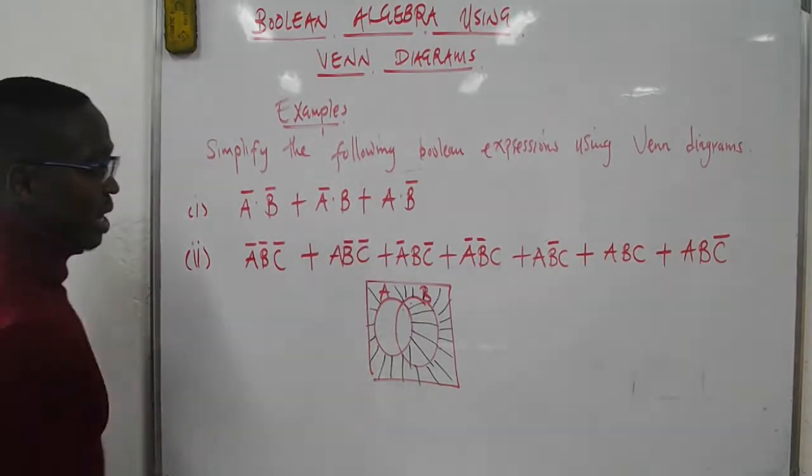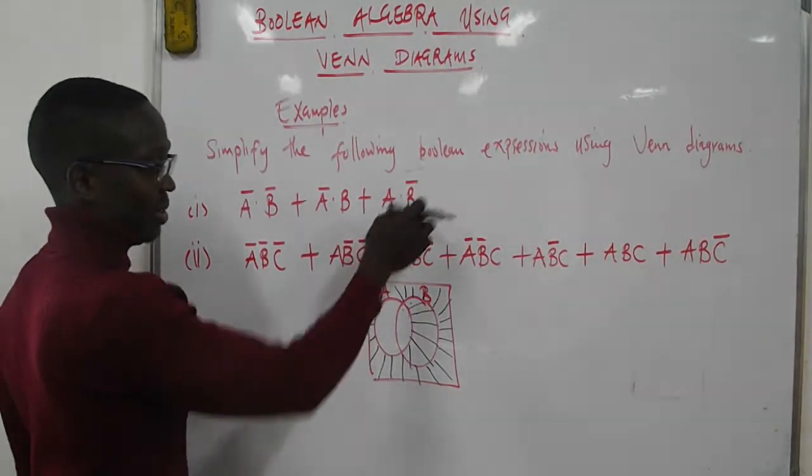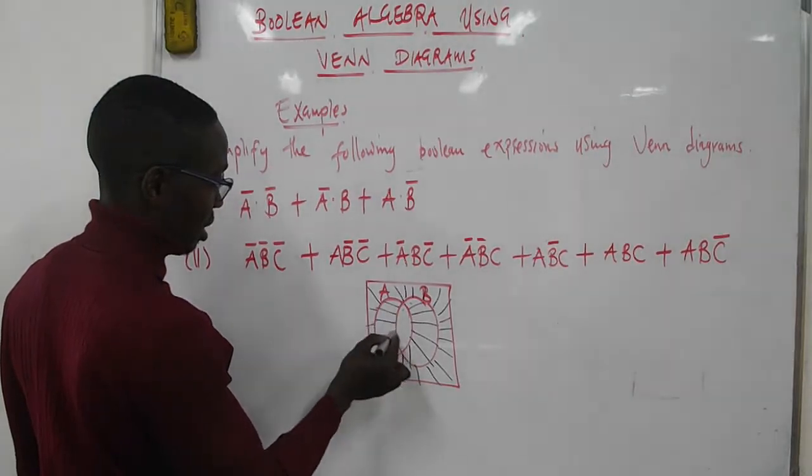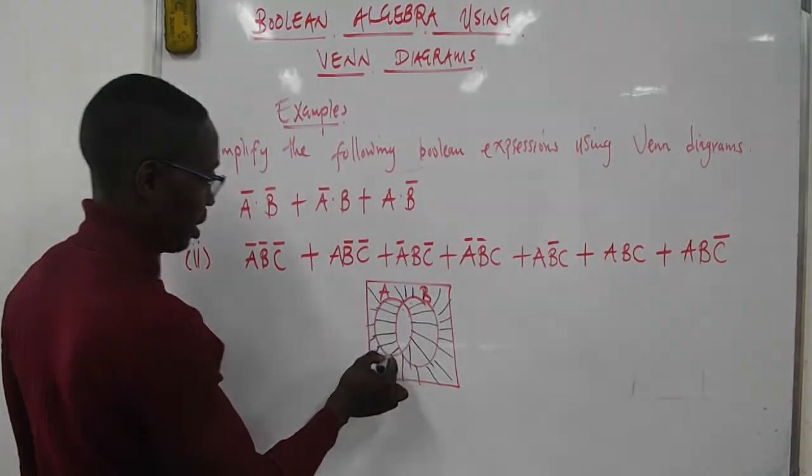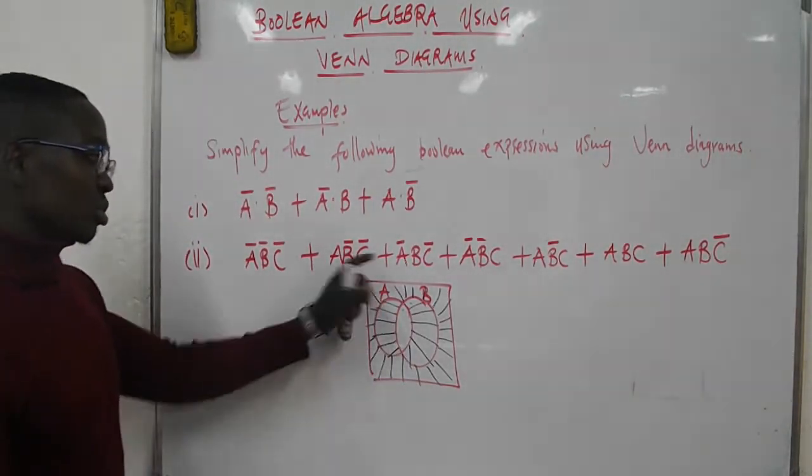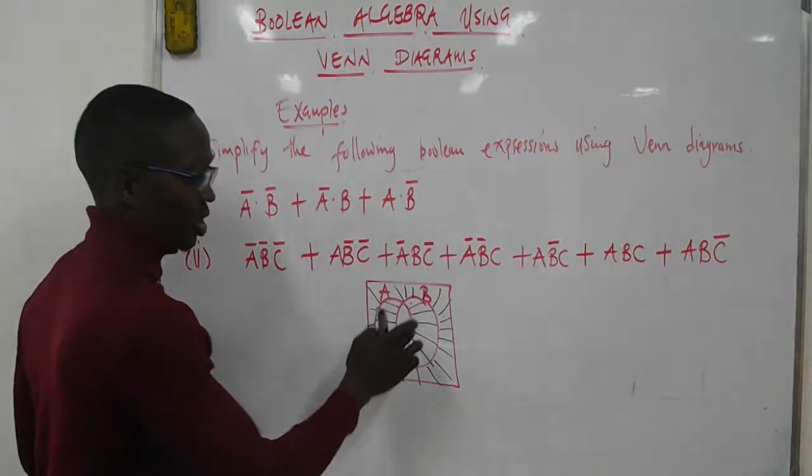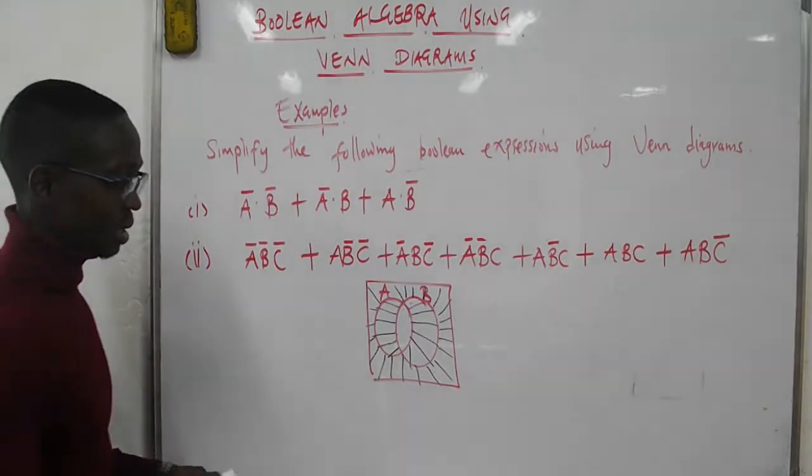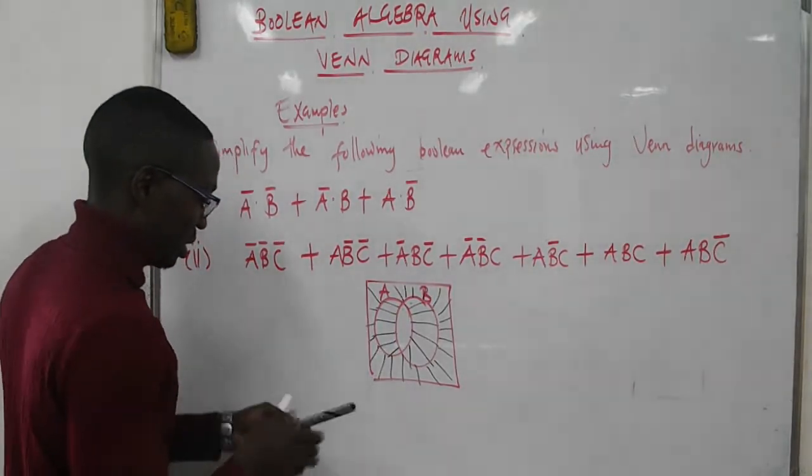Then we have AB̅, which is inside A but outside B. Now we need to describe the shaded region. The easiest way is to identify everything outside this unshaded set.